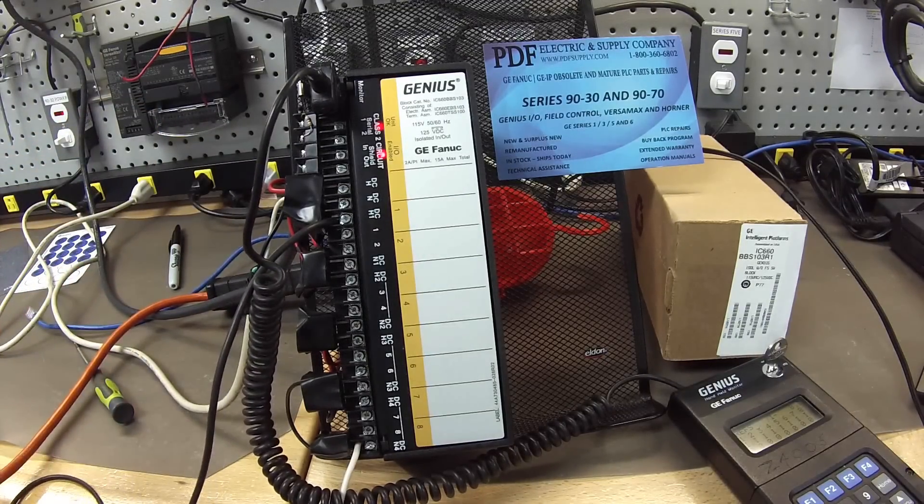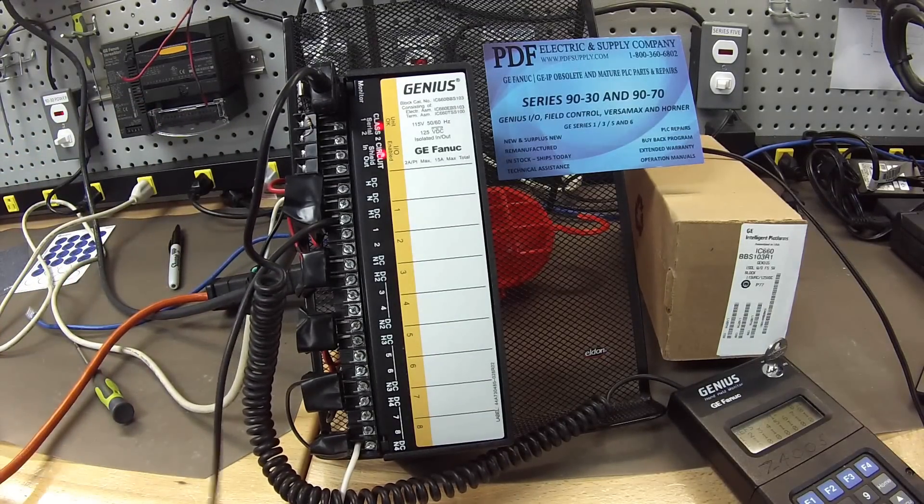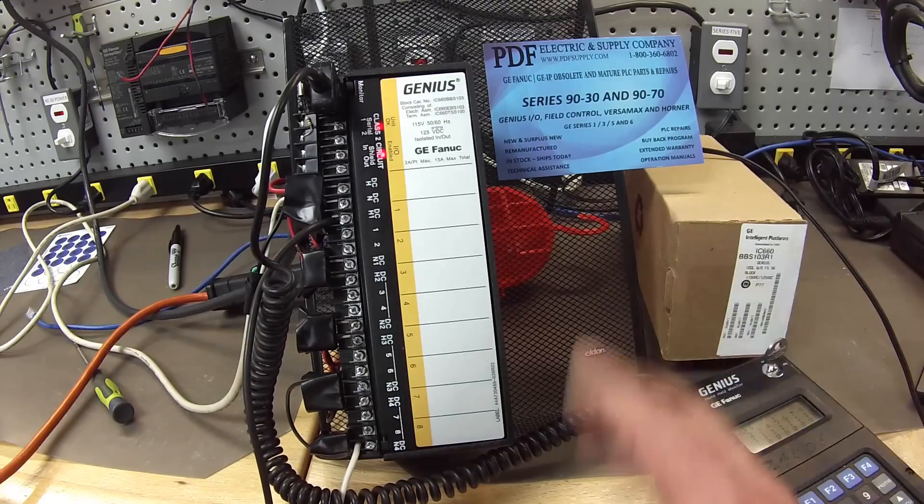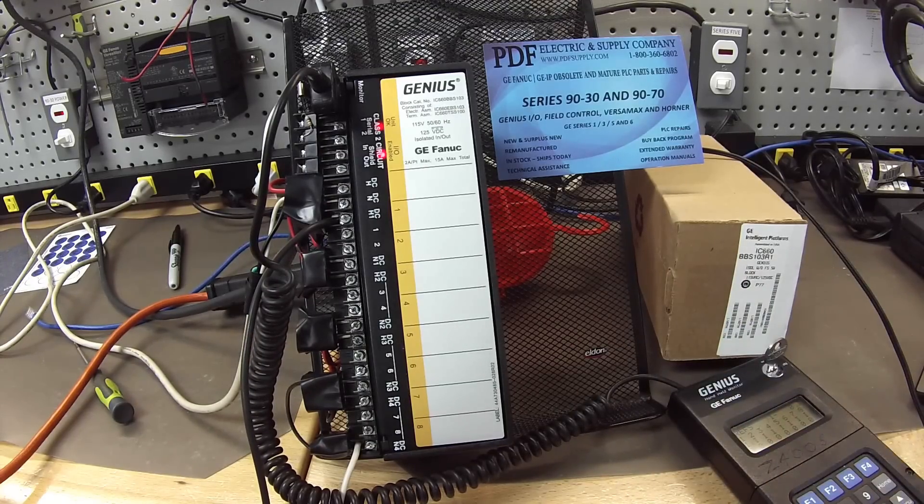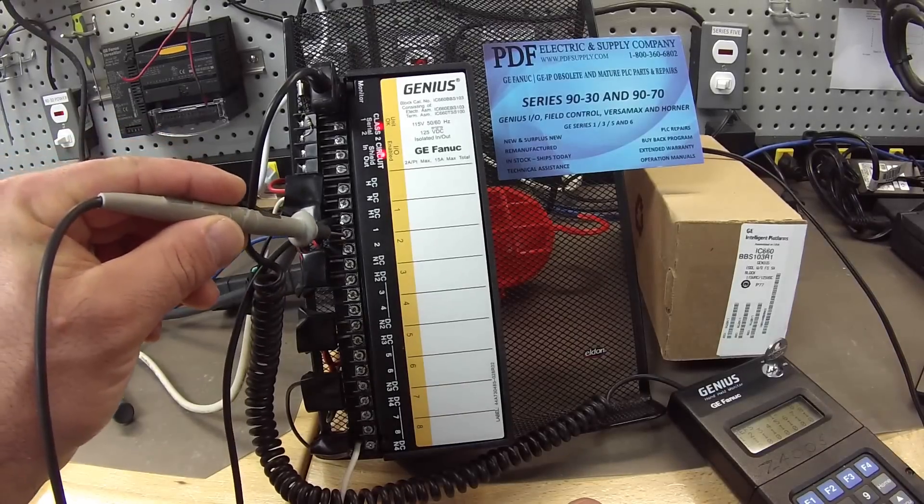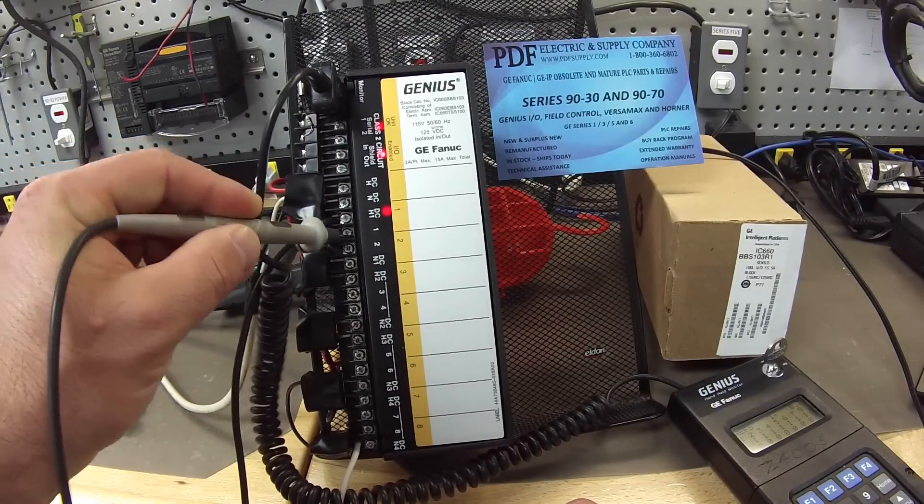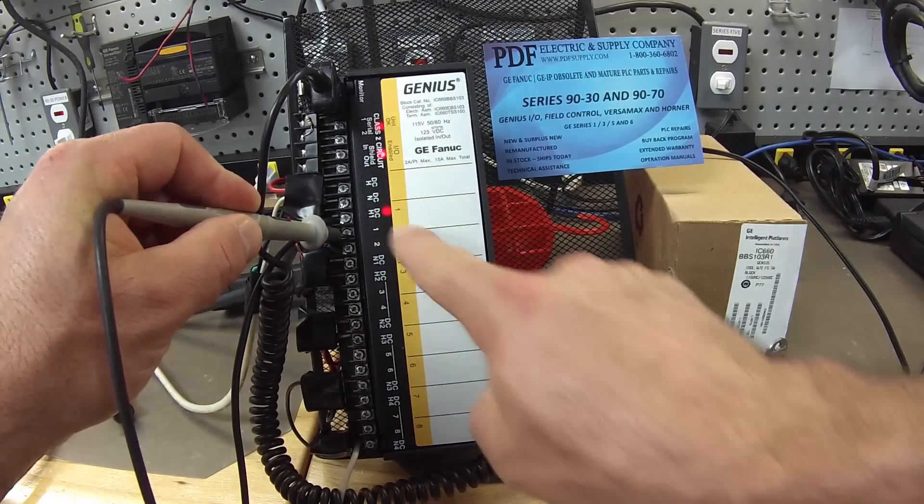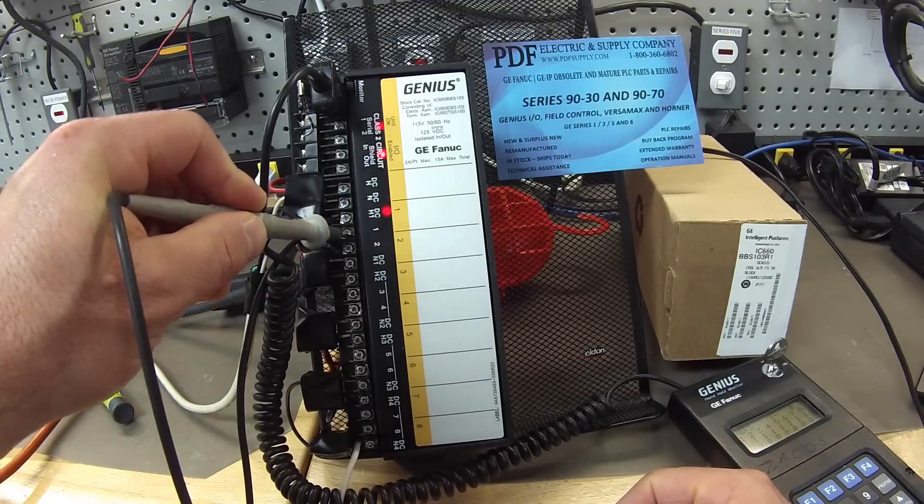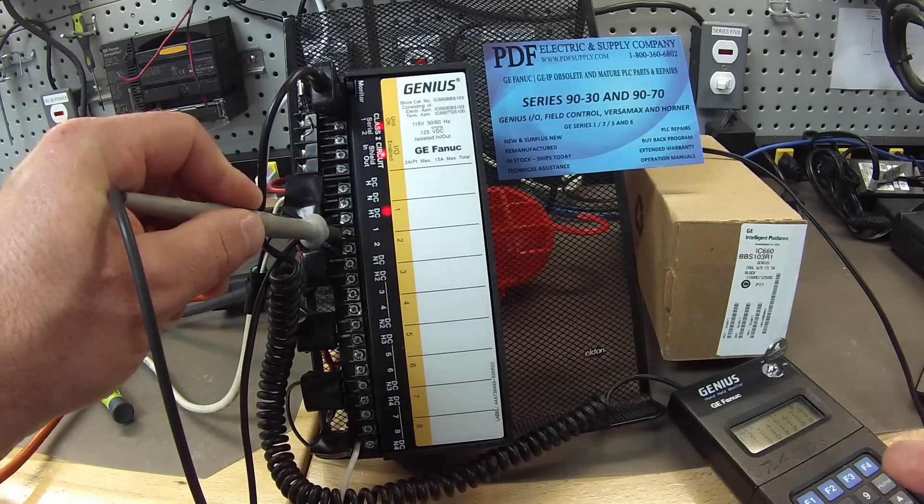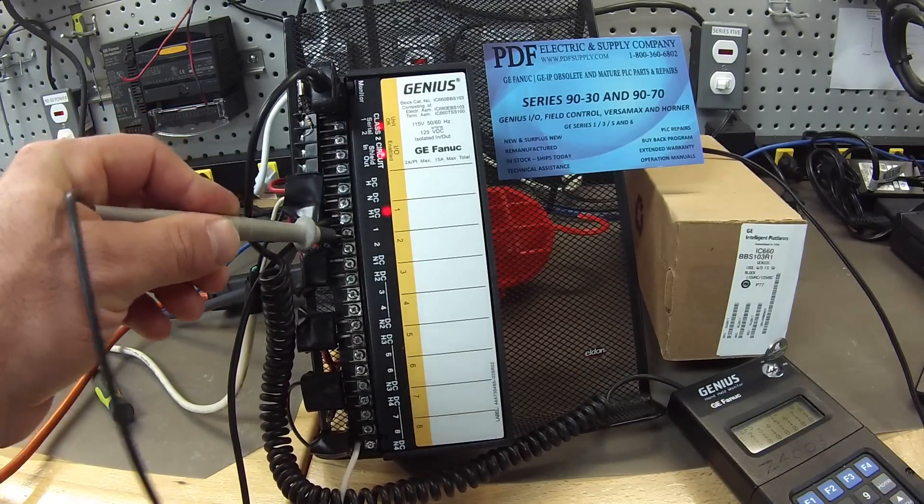What I'm going to show you is three ways that the inputs are being activated. The first way is if I touch to lead one, input one, this LED comes on. That's only for user reference. It doesn't exactly mean that the input is working.